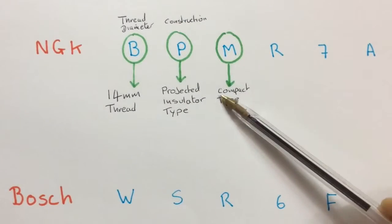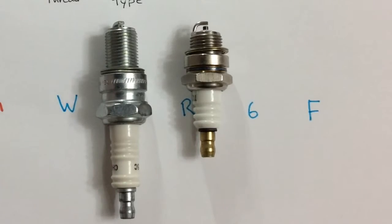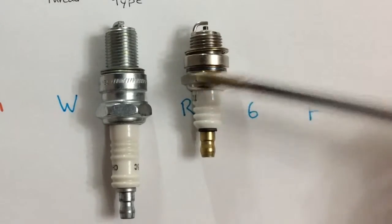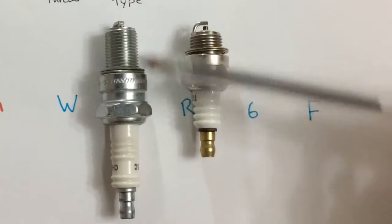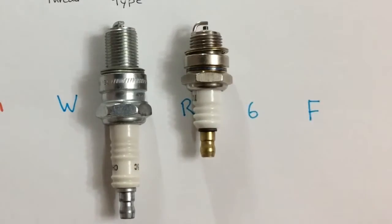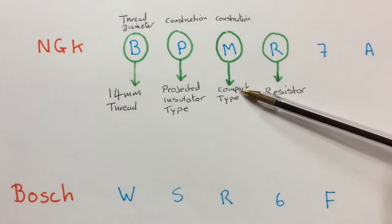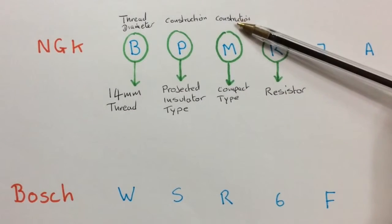Now M means compact type. And what that basically means is it's a compact size. When you compare it to some plugs out there, when you compare it to this one, you can see it's ideal for our little engine. So M means compact type and also relates to its construction.